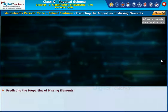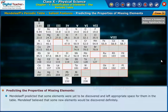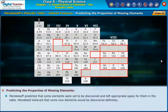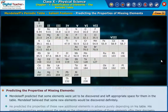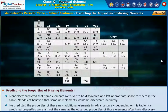Predicting the Properties of Missing Elements: Mendeleev predicted that some elements were yet to be discovered and left appropriate spaces for them in the table. He believed that new elements would definitely be discovered, and he predicted the properties of these elements in advance based on his table. His predicted properties were almost the same as the observed properties of those elements after their discovery.